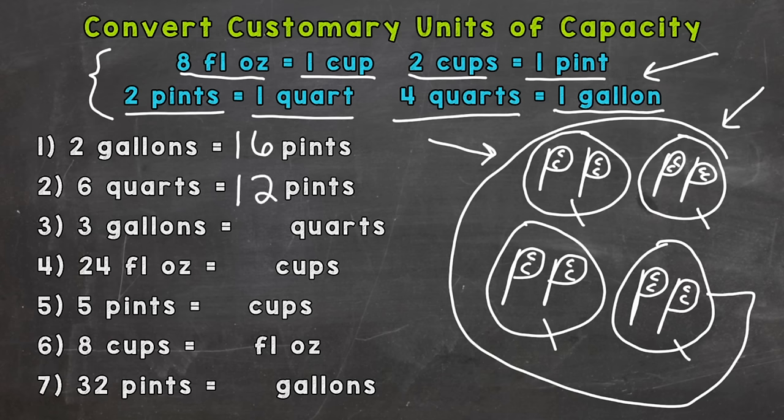Number three: three gallons equals how many quarts. There are four quarts in one gallon so we need to do three gallons times four which gives us twelve quarts. Again, four quarts in one gallon, so there would be twelve in three, or three times four.